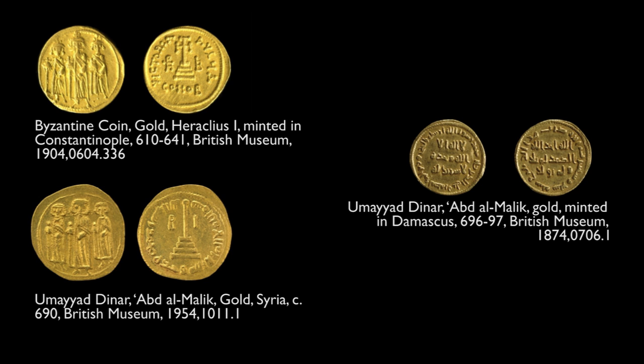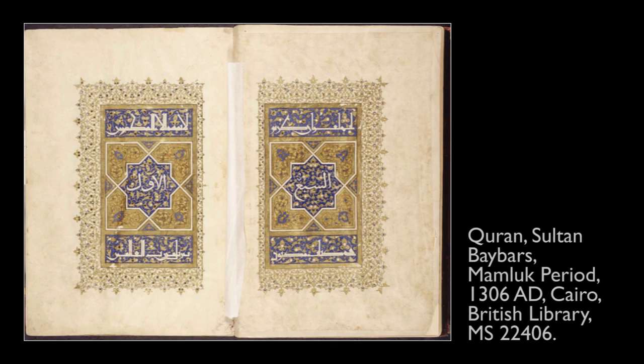By the late 7th century, something very different happened: all the figures were removed from Islamic coins, and the coins were filled with Arabic inscriptions. They almost always, in this early period, say the same thing — a very famous passage from the Koran — which is a very powerful statement about the new religion. After that, calligraphy and Koranic passages became very important decorative elements in Islamic arts, and many variations of script developed.